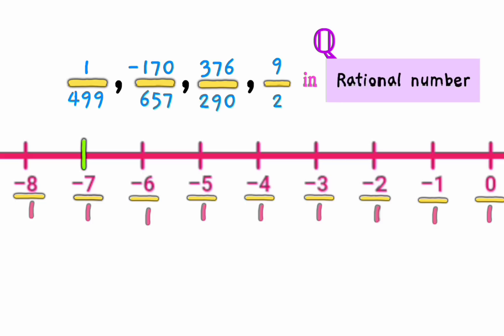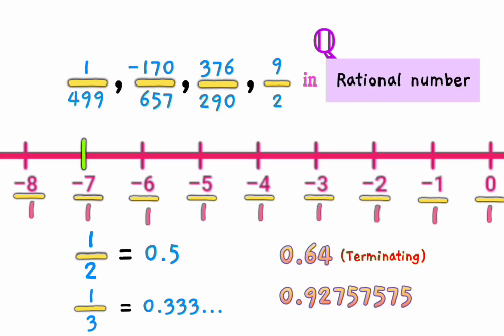Rational numbers usually have many representations. For example, 1 over 2 equals 2 over 4 equals 3 over 6 and so on. In addition, they can be written as decimal numbers such as 1 over 2 equals 0.5 or 1 over 3 equals 0.3333333 and so on. So, the decimal expansion of rational numbers is either finite like 0.64 or it eventually consists of repeating blocks of digits like 0.9275757575 and so on.